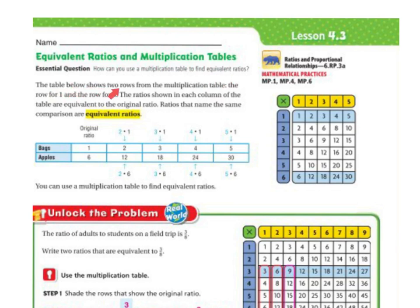The table below shows two rows from the multiplication table, the row for 1 and the row for 6. The ratios shown in each column of the tables are equivalent to the original ratio. Ratios that name the same comparison are equivalent ratios. So, bags to apples, 1 to 6. 1 to 6 is the same as 2 to 12, because I double 2, which means I'm going to have to double the 12. If I had 3 bags, it would be 18. If I had 4 bags, it would be 24. If I had 5 bags, it would be 30.